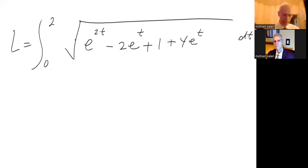I can simplify that so length equals from zero to two, square root of e to the two t. Now minus two e to the t and positive four e to the t gives me plus two e to the t plus one.